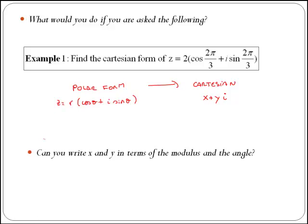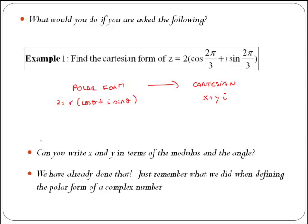Do you know how to do that? Just think about, can you write x and y in terms of both the modulus and the angle? You're probably wondering how to do it, or we have already done it. Just remember what we did when defining the polar form of a complex number. I'm just going to refresh it a bit.